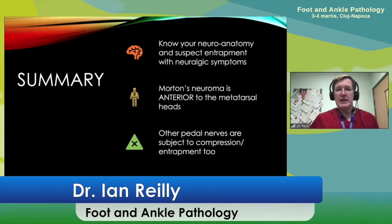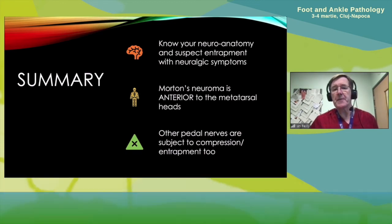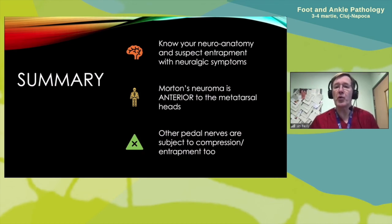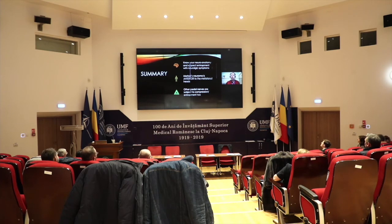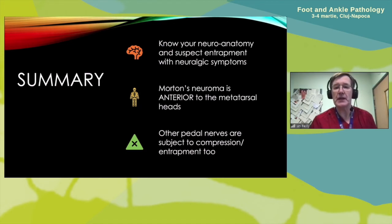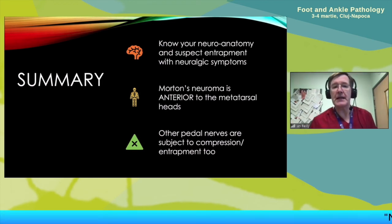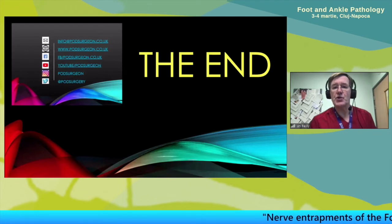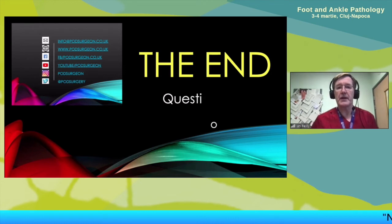In summary, nerve entrapments of the foot and ankle are really common — I see one or more every day in my practice. I think they are underdiagnosed. When a patient presents with neurologic-type symptoms around the foot and ankle, just have nerve entrapment at the back of your mind as a suspicion — which means you need to know your neuroanatomy and the cutaneous distribution of these nerves. Think about Morton's neuroma as the most common, presenting anterior to the metatarsal heads especially at three-four. All the nerves are subject to compression and entrapment, so anytime you see sharp shooting pains around the foot and ankle, have that as one of your differentials — even if it complicates another pathology, particularly plantar fasciitis.